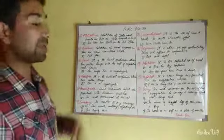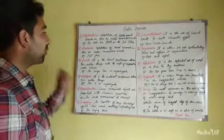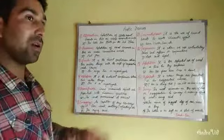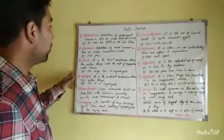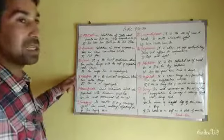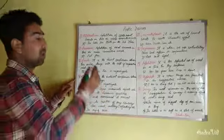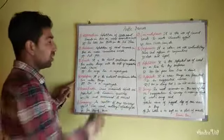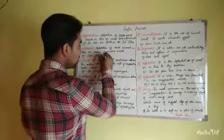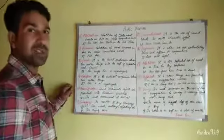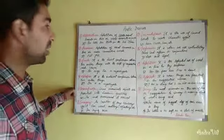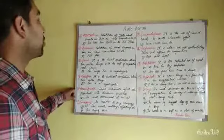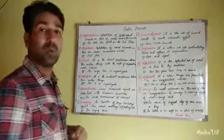Assonance means the repetition of vowel sounds. When vowel sounds are repeated in a continuous manner, we say it is assonance. For example, 'feel free' — the 'ee' vowel sound is being repeated. There are 20 vowels in the International Phonetic Alphabet, and here the 'ee' sound is repeated, so it is assonance.